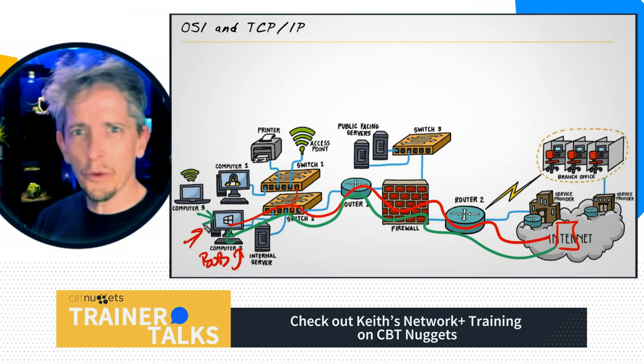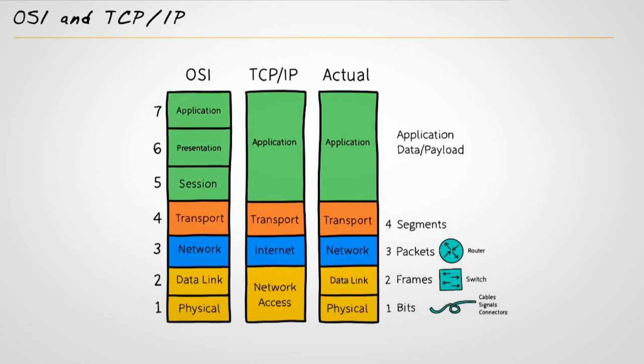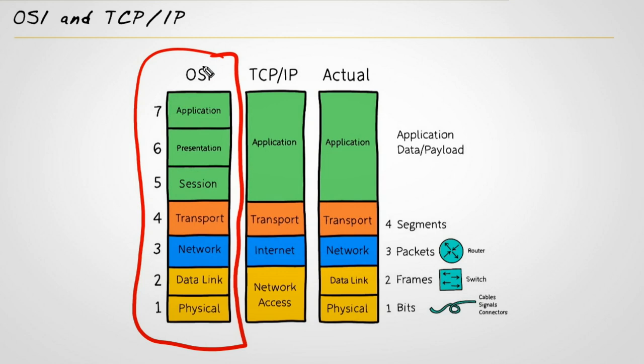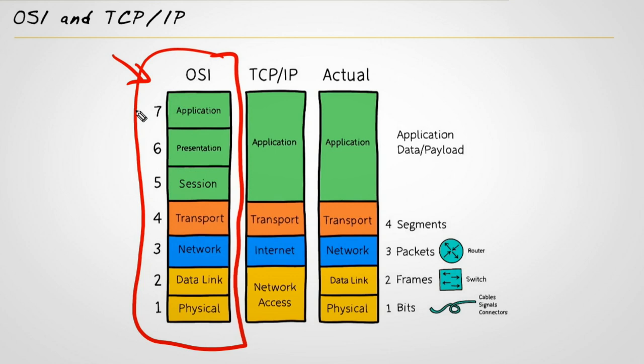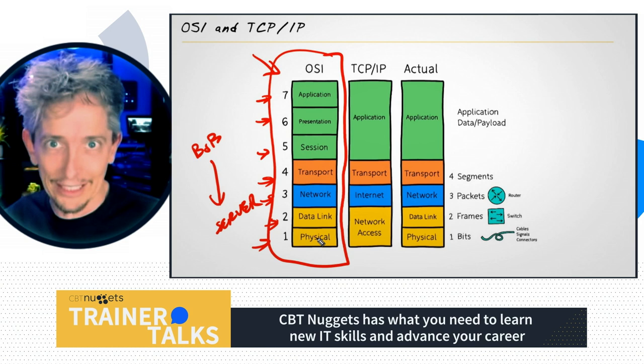Let me introduce you to one of the oldest reference models for computer networking — the OSI reference model. Back in the 80s when I first learned about networking, this is the model I was introduced to. What this model represents is individual pieces or components included in network traffic as it's being sent, like from a user like Bob talking to a server. It's just a reference — we don't actually literally use the OSI model anymore. We use real protocol stacks like TCP/IP, which we'll talk about in just a moment.